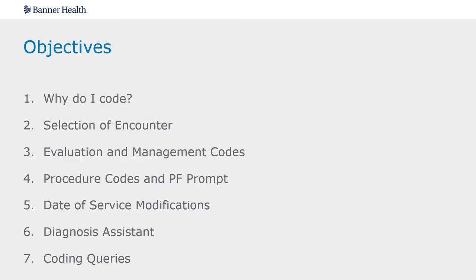In this module we will go over why you will be selecting your levels of service, how to verify what type of encounter you are in, where to find your evaluation and management codes, what the expectation is for coding at Banner if you do an operation or procedure, how to modify your date of service on your documentation or your orders, and a quick look at what diagnosis assistant can do for you and why you might receive coding queries.